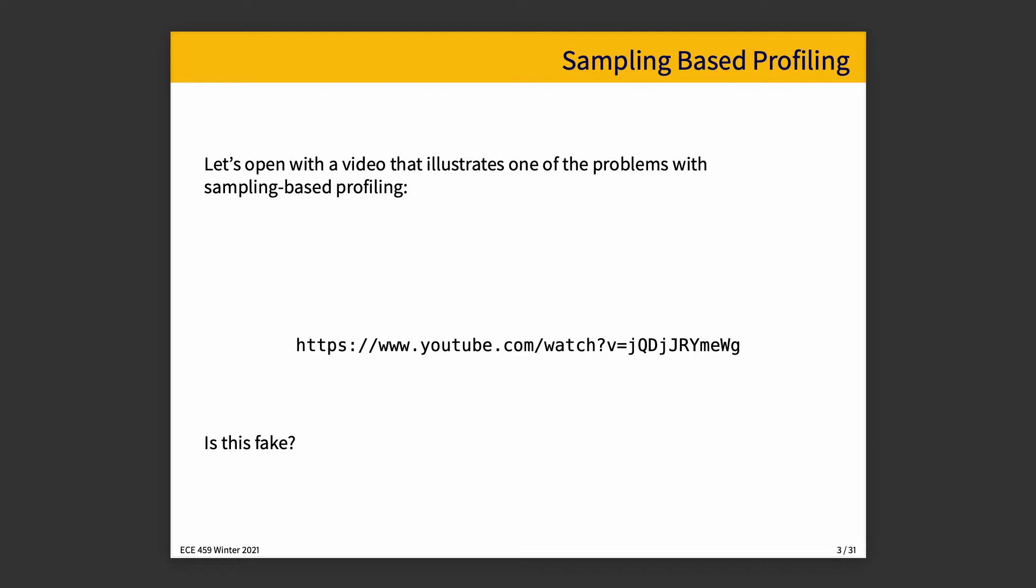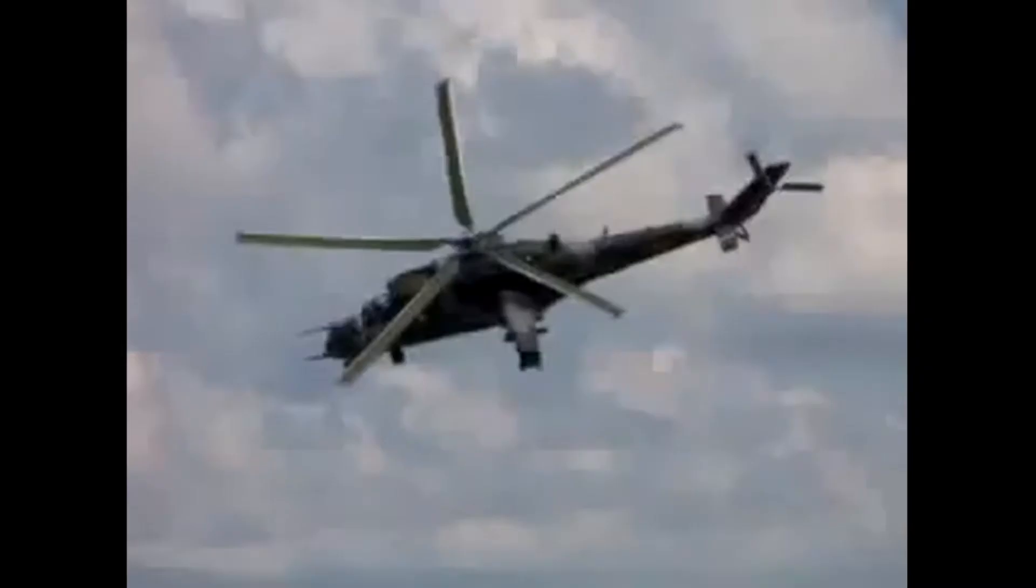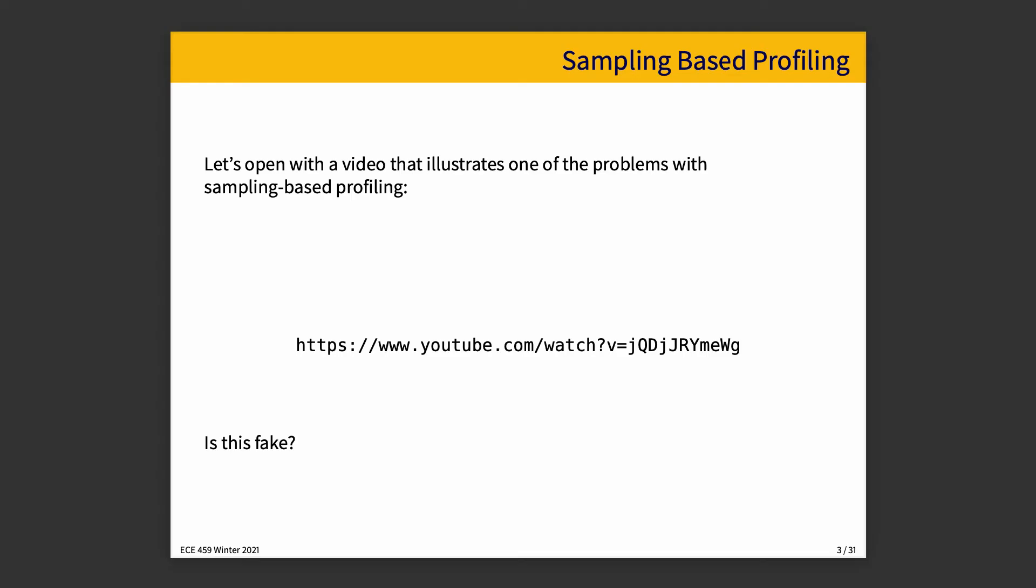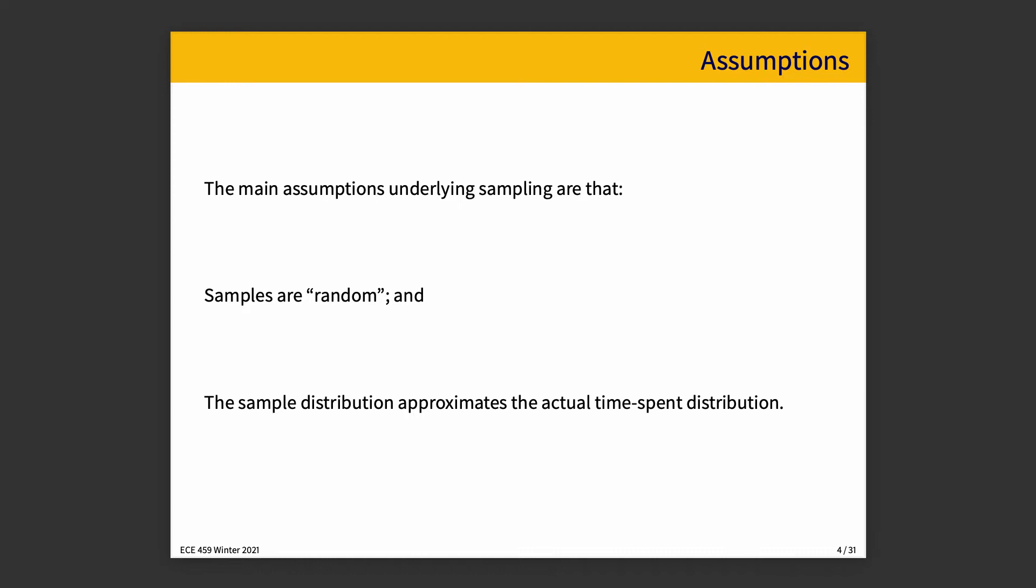I'll open with a video that shows one of the problems of sampling-based profiling. The question I ask you is, is this a fake? No, it's not a fake. It's a real helicopter. It's really flying. What's happening, however, is that the camera captures images at a certain rate, and that rate happens to be some multiple of the blade rotation speed, so it gives the illusion that the blades aren't moving. This is a sampling problem. You can see that when you see a car commercial on TV where it looks like the wheels are spinning backwards.